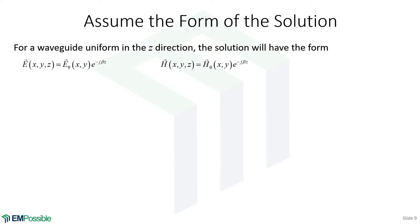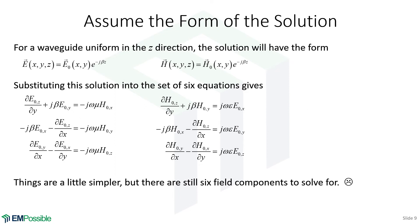Going back to the math: we've assumed this form of the solution as the product of two terms, and we do the same for the magnetic field. We take that solution and substitute it back into our set of six coupled partial differential equations. Instead of EX, EY, EZ, we now have E-naught-X, E-naught-Y, E-naught-Z — the components of the amplitude term. Also, our Z derivatives have disappeared, and the partial with respect to Z has become j-beta, simply meaning nothing changes in the Z direction except phase accumulation.